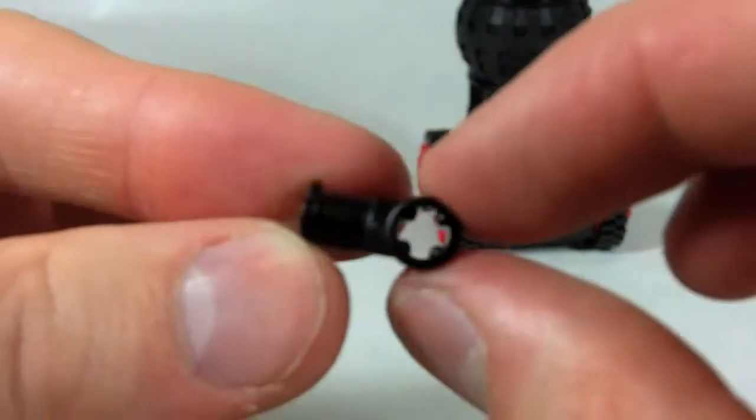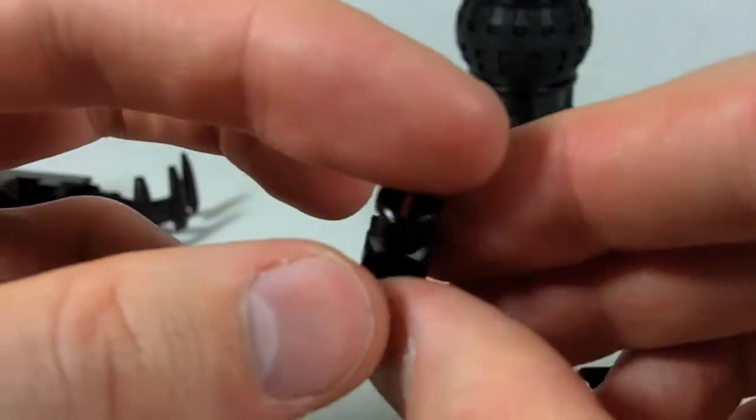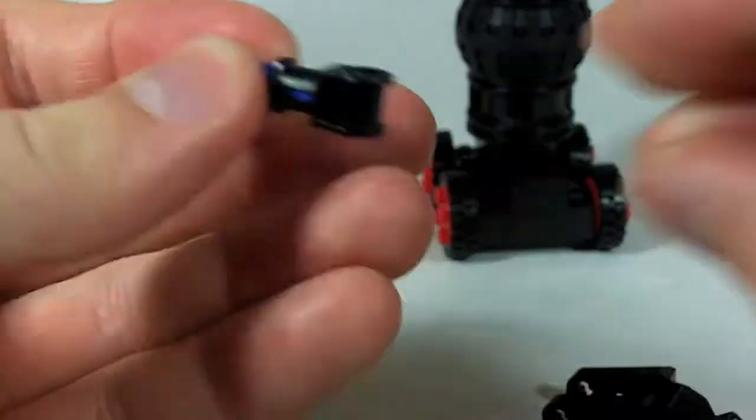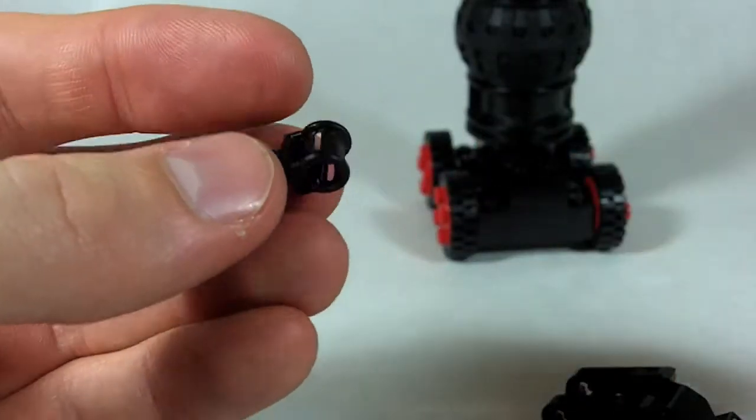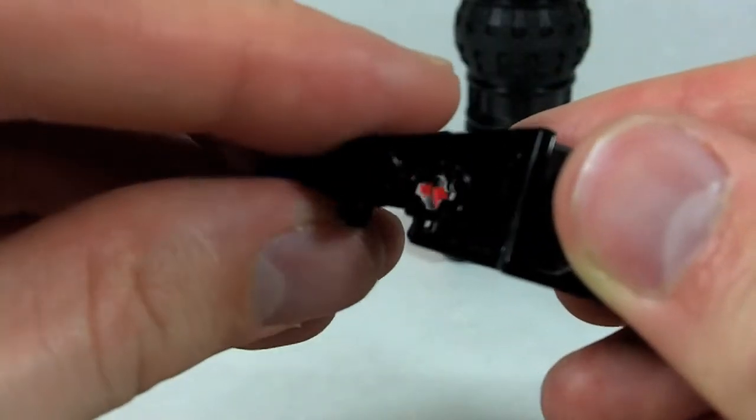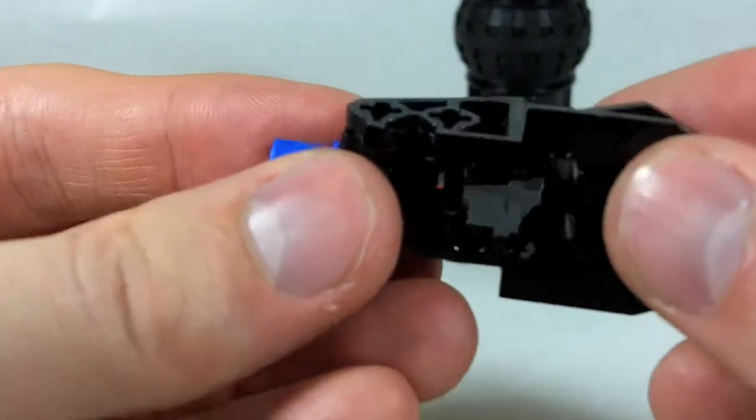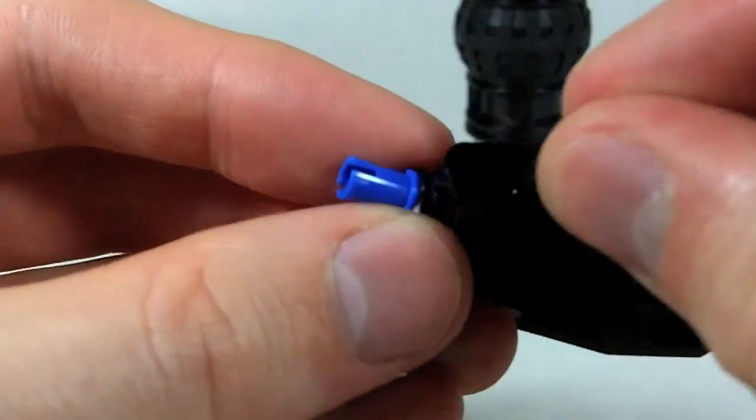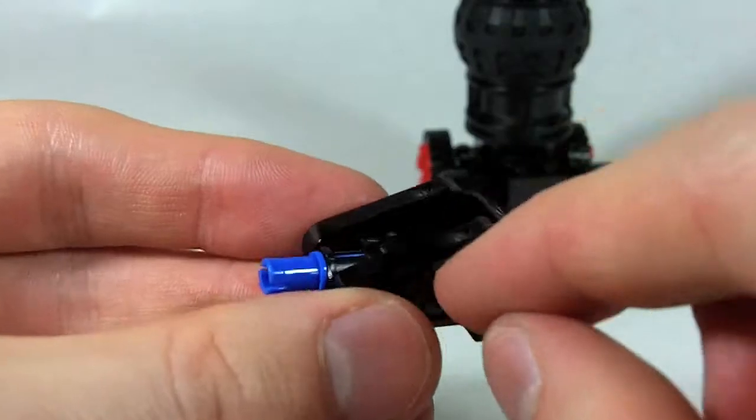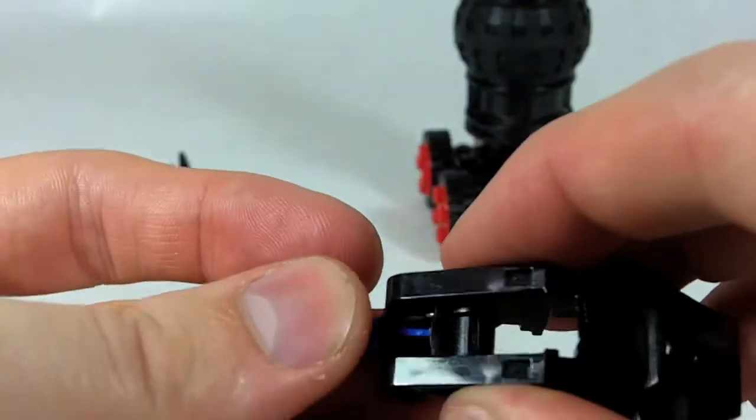Hold on one second. So take this axle to 90 degree axle hole connector. Put an axle to pin connector in there. Then stick this into the throwbot head axle connection there. And stick a two long axle through. And then it's hard to get out because you have to push it out with an axle. But it's fine.